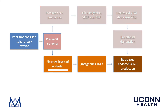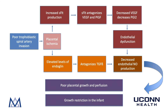Placental ischemia also causes elevated levels of endoglin. Endoglin impairs binding of TGF-beta to its receptors and downstream signaling, including effects on activation of nitric oxide production and vasodilation. Putting this all together: decreased endothelial nitric oxide production, as well as decreases in VEGF and placental growth factor, leads to poor placental growth and perfusion — and this all leads to growth restriction in the infant.